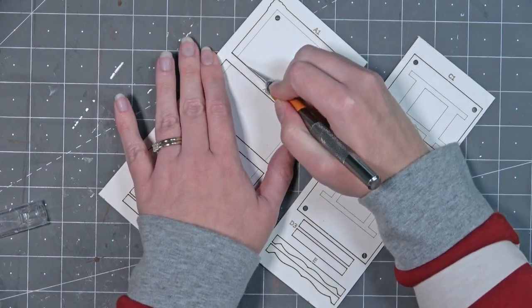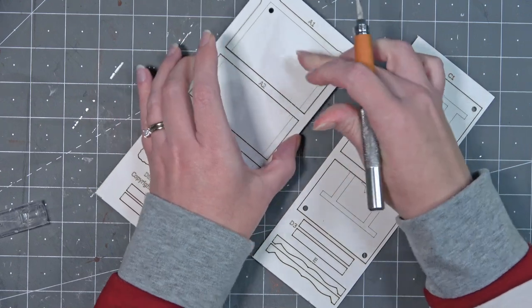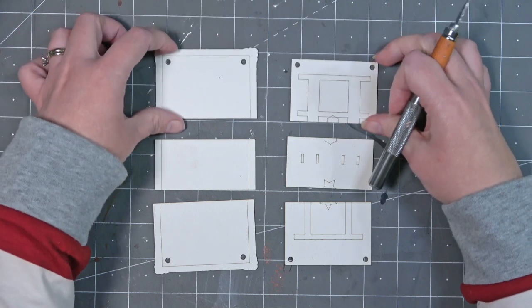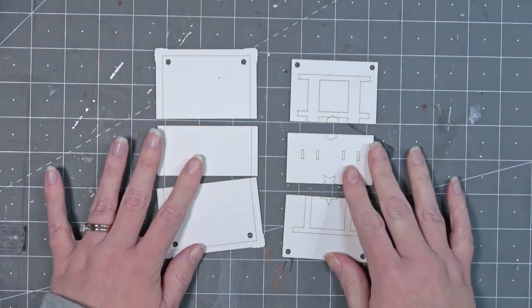Once they're removed you can lay them out on your table so that the pieces marked A1 are across from the pieces marked C1. This is how they will look once everything's cut out.